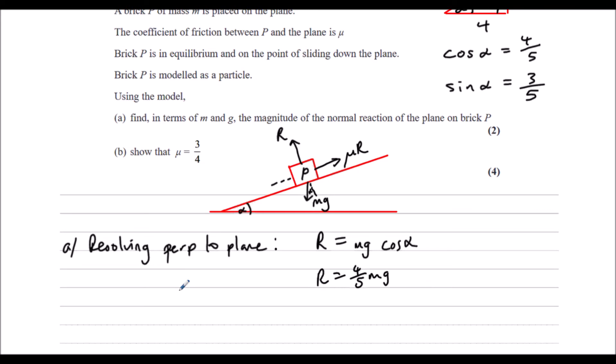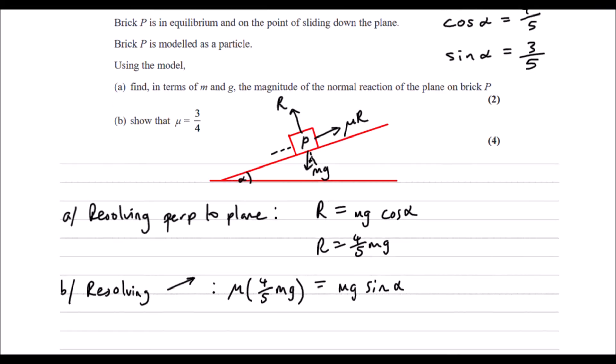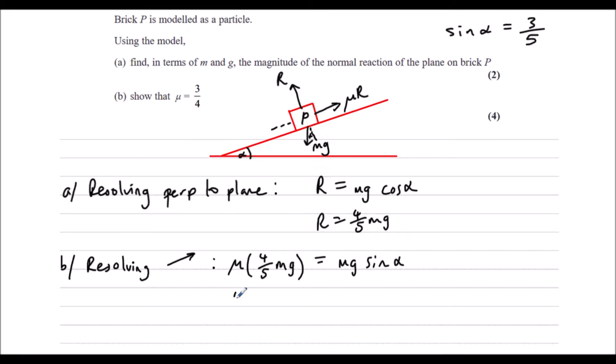Part B. Show that mu is 3 quarters. So this time we're going to resolve parallel to the plane. So going up, we have mu times R. And R is 4 fifths mg. So mu times 4 fifths mg. Going down, we have the other part of our weight. The other part of our mg. Which is mg sin alpha. Sin alpha is 3 fifths. So we've got 4 fifths mg times mu is equal to 3 fifths mg.